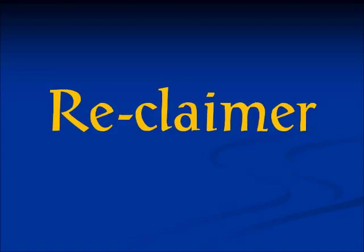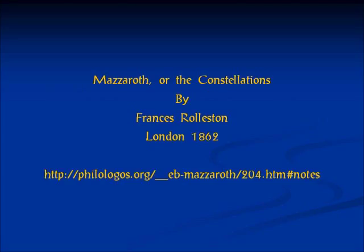Recently I've been looking at some older books and I actually found a very similar — almost exactly the same — teaching in a book that was published in the 1800s. The name of this book is Mazzaroth, or The Constellations. It's by Frances Rolleston. It was published in 1862 in London.